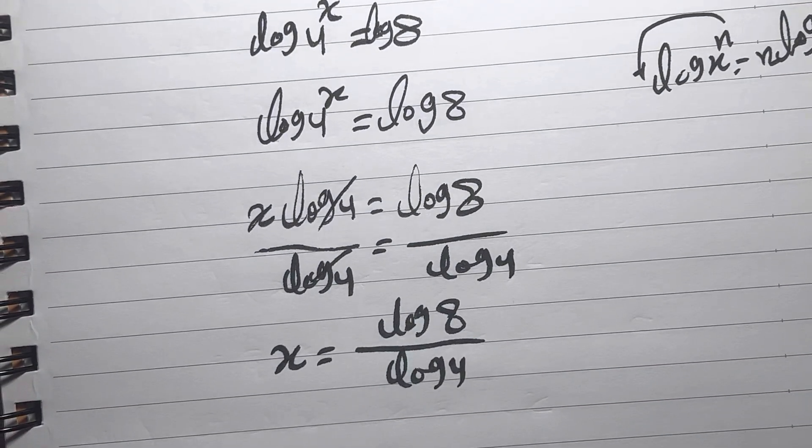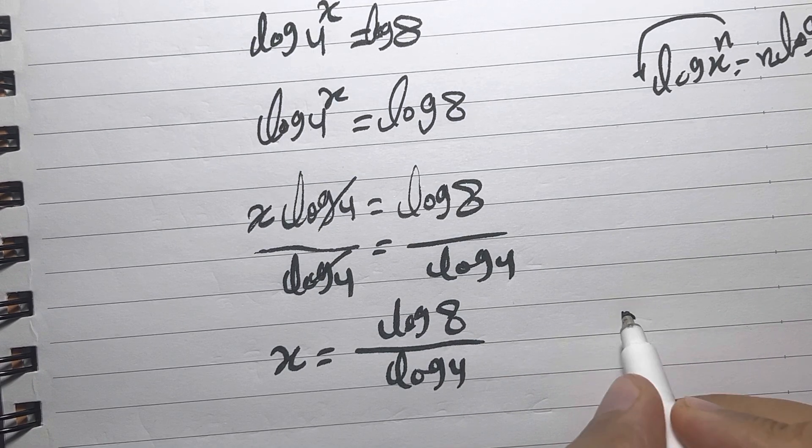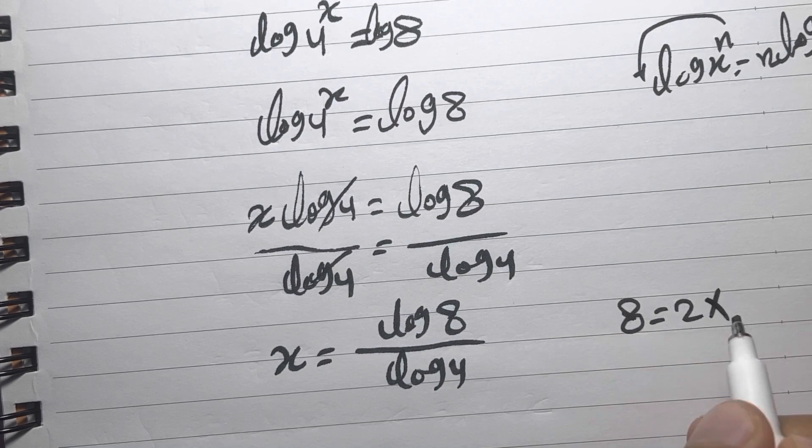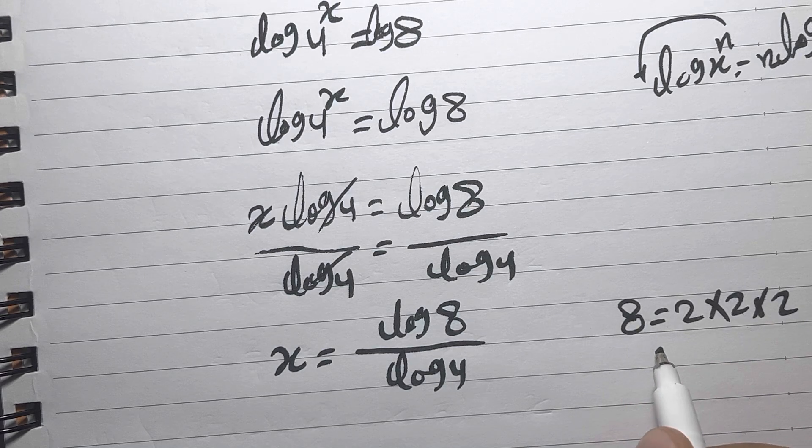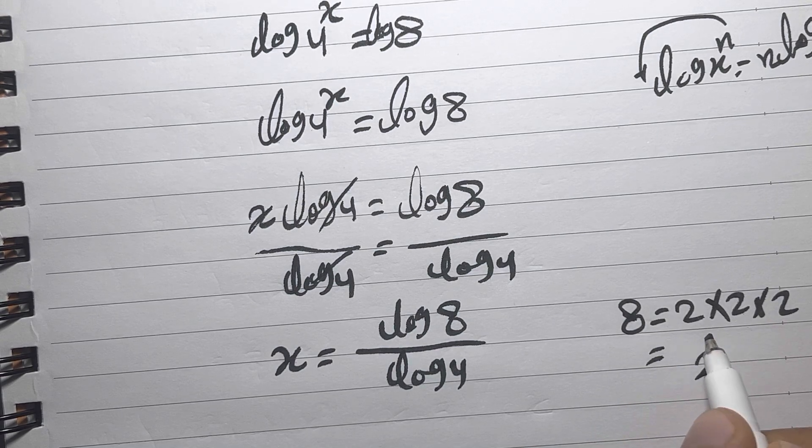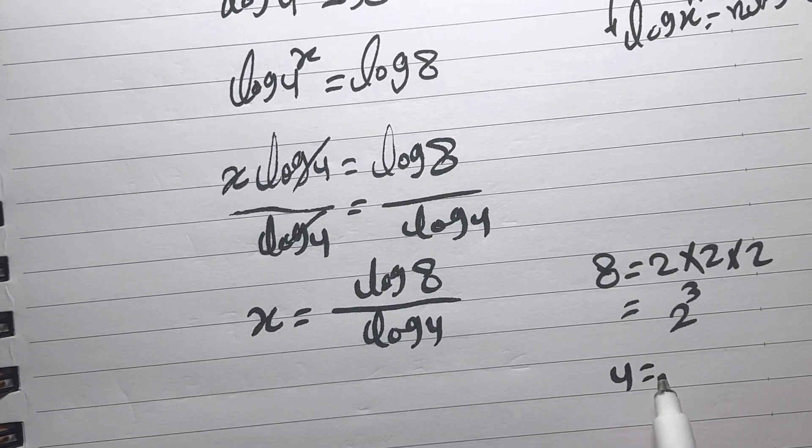The 8, we know already, equals 2 times 2 times 2, so we can rewrite 8 as an exponent: 2^3. And 4 also equals 2 times 2, which as an exponent is 2^2.